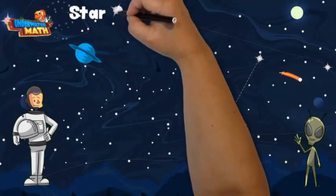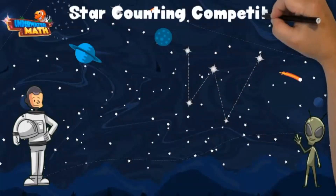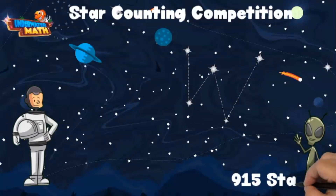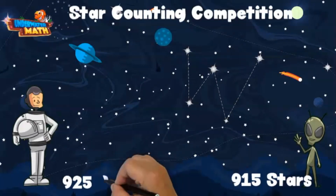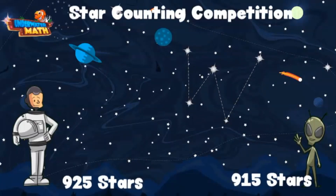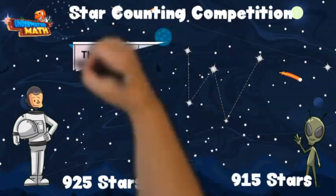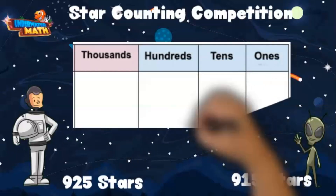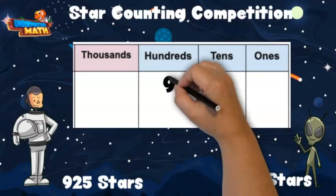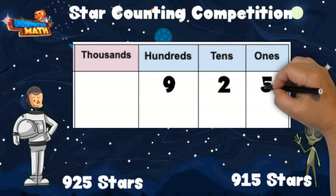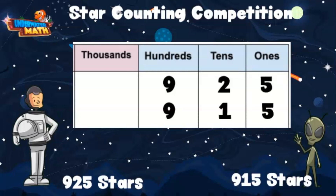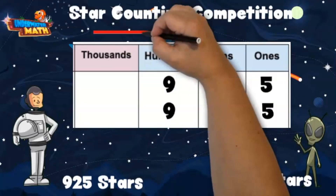Lenny and I are in a star counting competition. Lenny counted 915 stars and I counted 925 stars. We want to compare these two numbers to determine who is the winner. Sometimes it helps to use a place value chart to compare the two numbers. Let's write the two numbers on here.